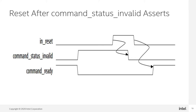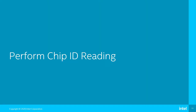When there is a problem in sending the command packet, probably due to an incorrect command header format, we will need to reset the IP to restart the Nearbox Avalon SD client IP. To do so, assert the reset after command status invalid is asserted. Then we may start to send the command packet again when command ready is asserted.